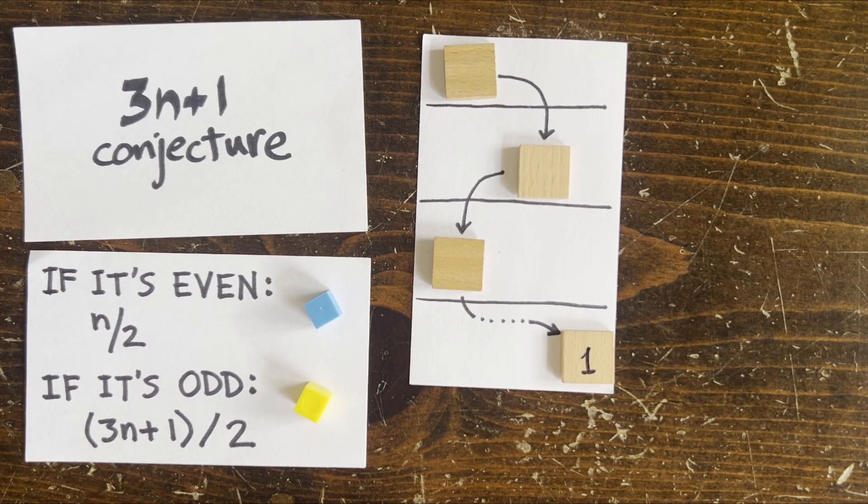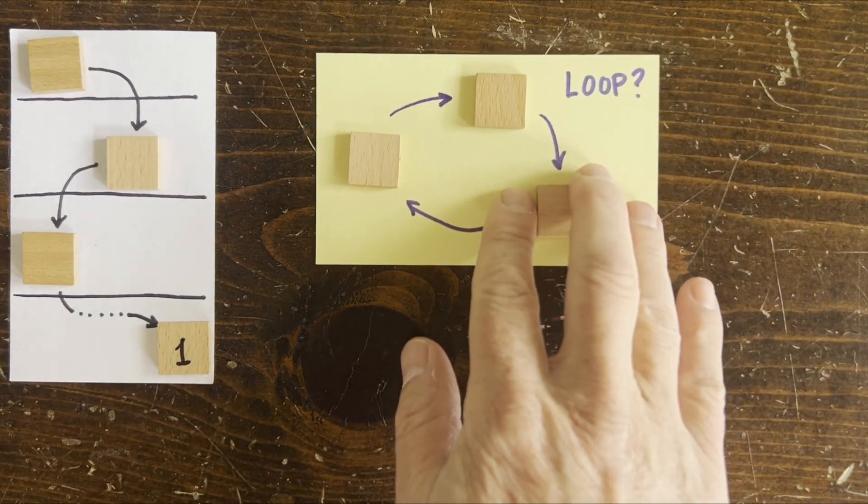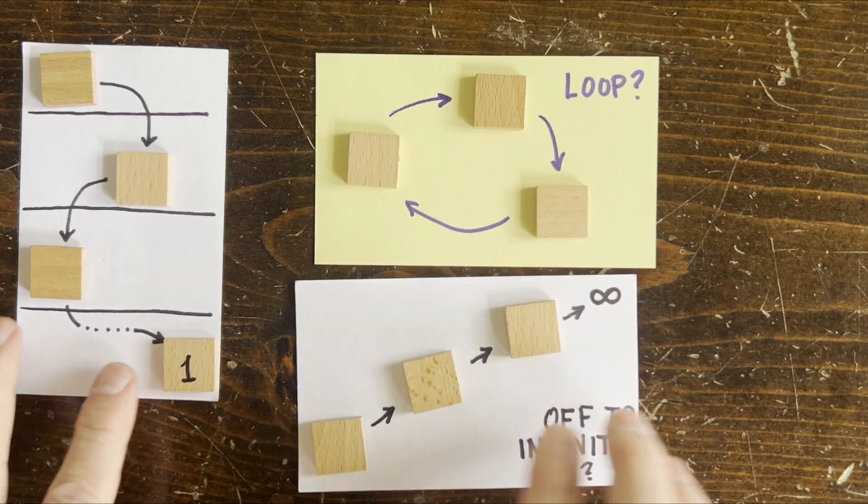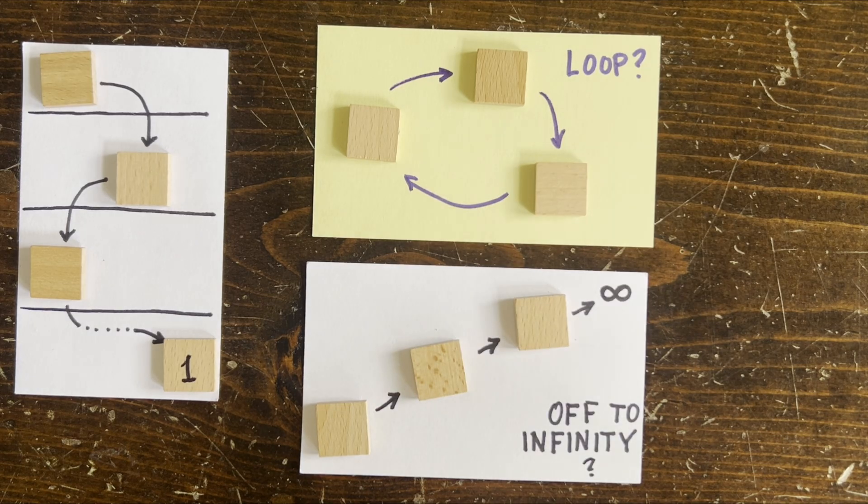It's conjectured that every number goes to 1. So we can try to prove that's the case. Or we can show a loop of huge numbers that goes round and round without hitting 1. Or we can show a number that diverges to infinity. And we haven't looked much at divergence so far, so let's commit some time to that.